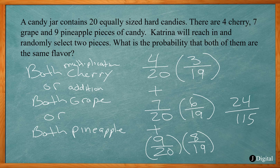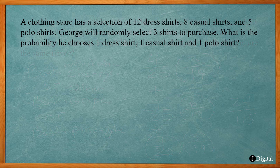To summarize this problem: we needed to recognize it means 'both are cherry OR both are grape OR both are pineapple,' requiring both the multiplication rule of probability and the addition rule of probability together.